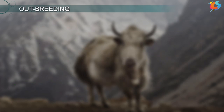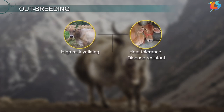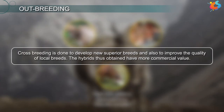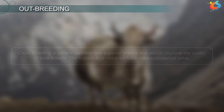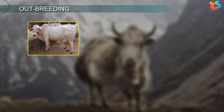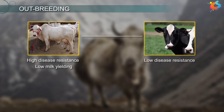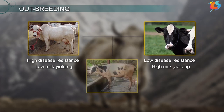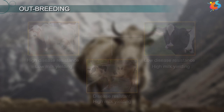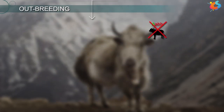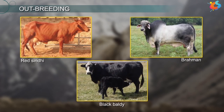In crossbreeding, two animals of different breeds but of the same species are mated together. The offspring produced will have dominant characters of both animals. Crossbreeding is done to develop new superior breeds and also to improve the quality of local breeds. For example, when the indigenous cow breed Tharparkar — having high disease resistance and low milk yield — is mated with the exotic breed Holstein, which has low disease resistance and very high milk yield, a special hybrid called Karan Fries is formed. This cow was both disease resistant and had high milk-yielding capacity. The hybrid is then subjected to inbreeding and selection to develop a stable hybrid.